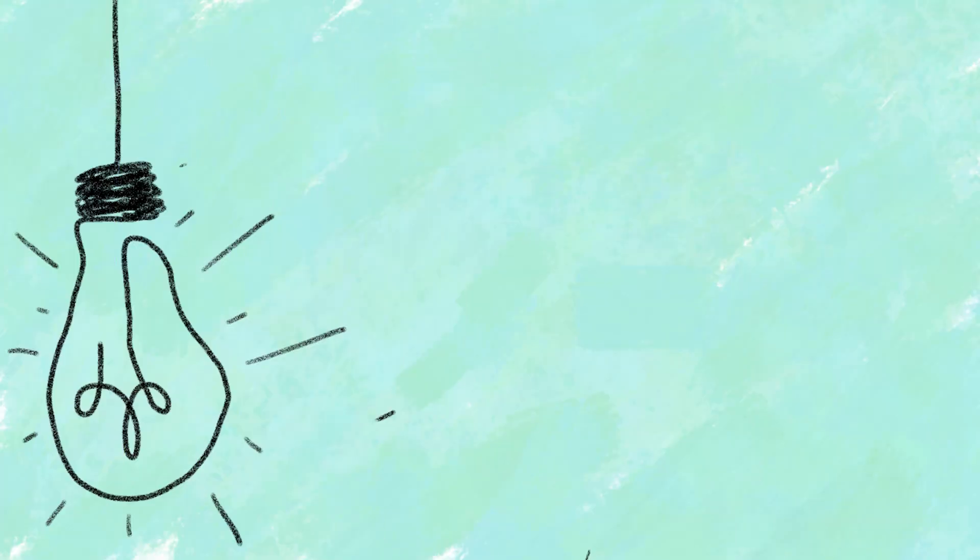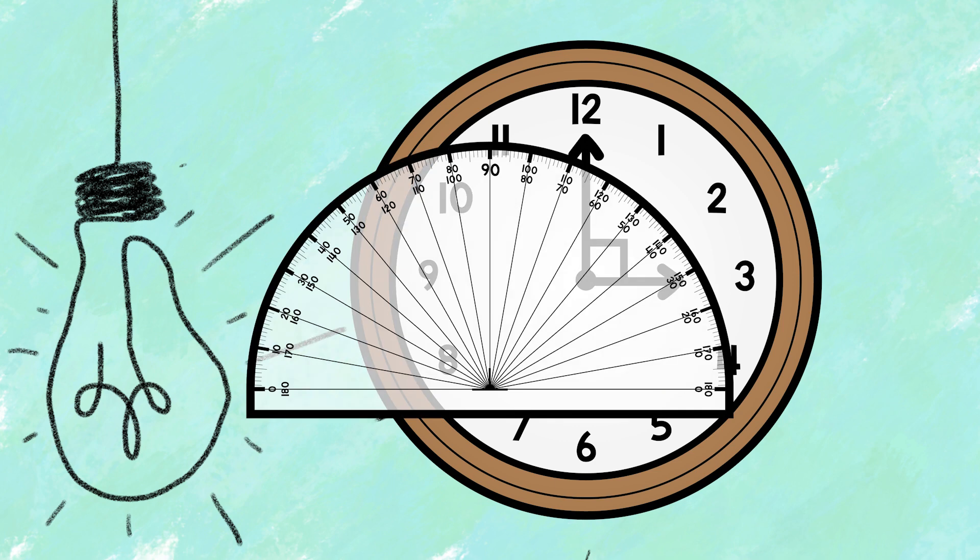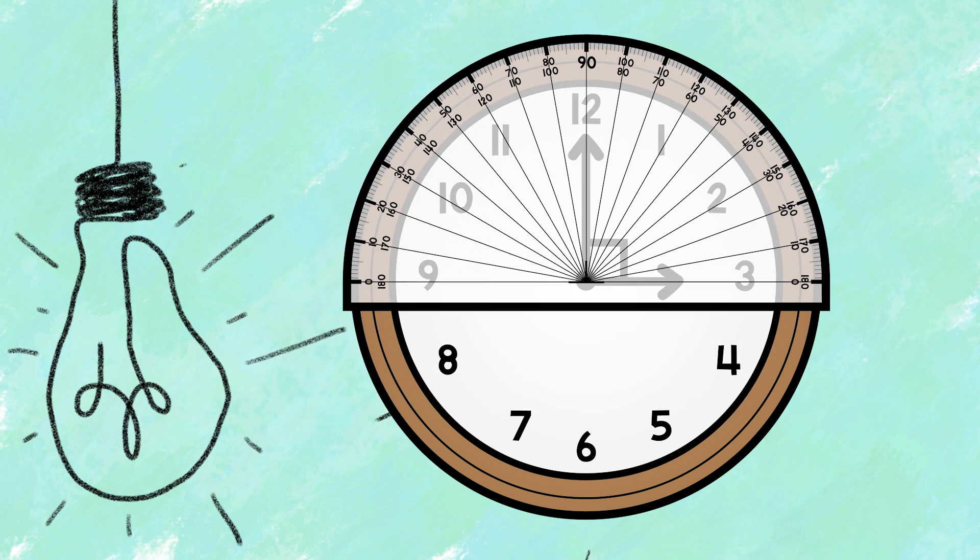All right, now let's look at this angle. Same thing. Step one, line it up on the vertex. Step two, bottom line with the ray. Step three, where does the other line intersect?